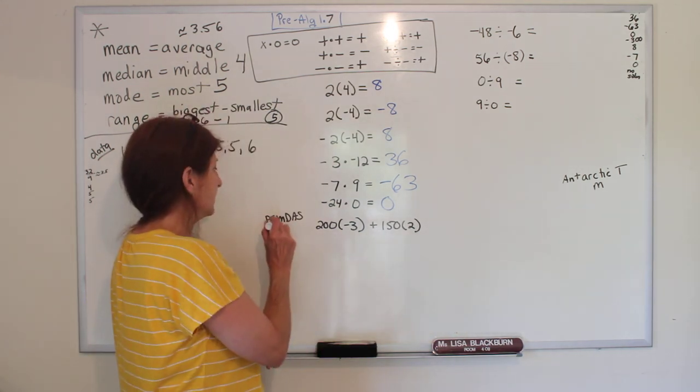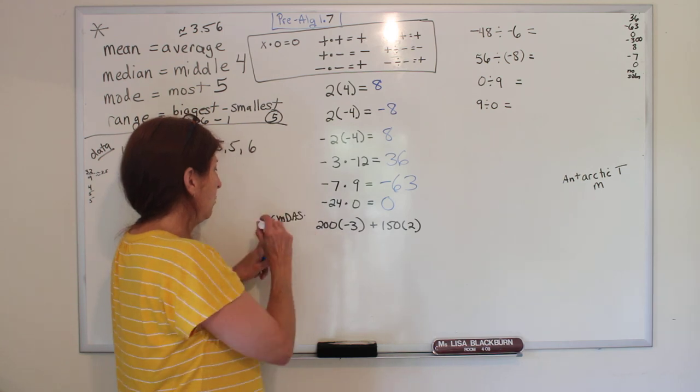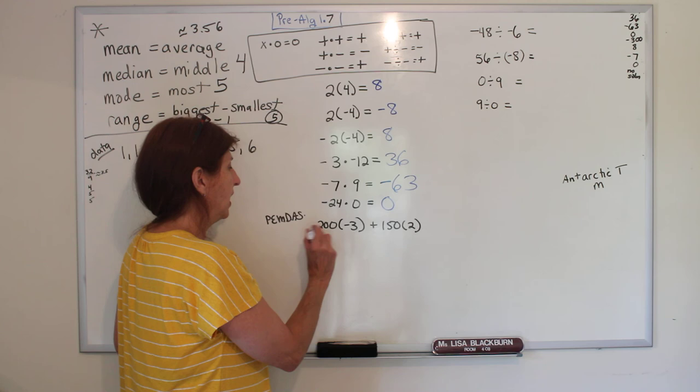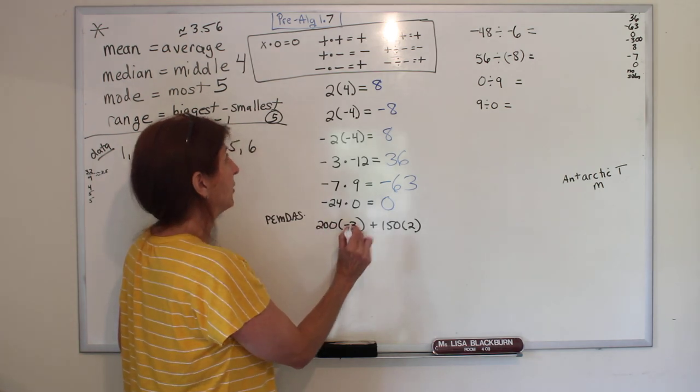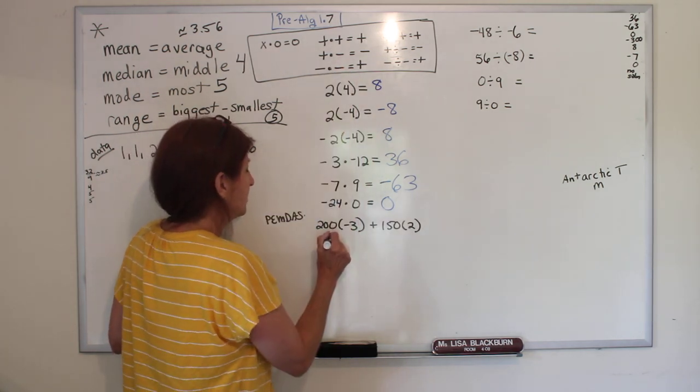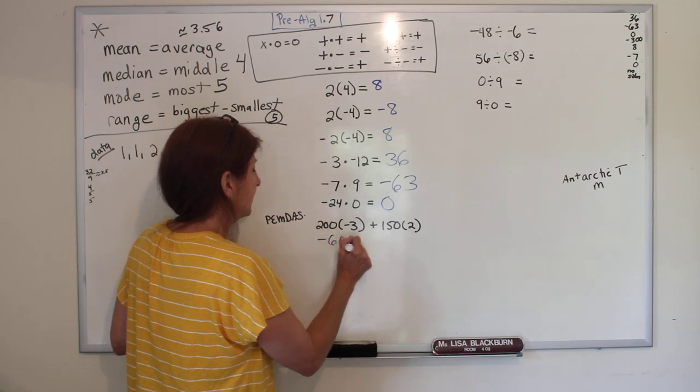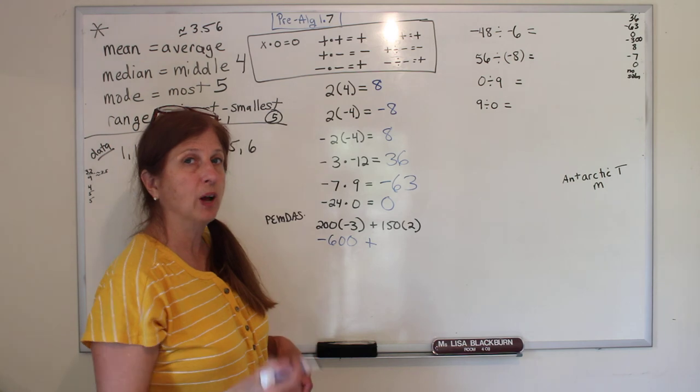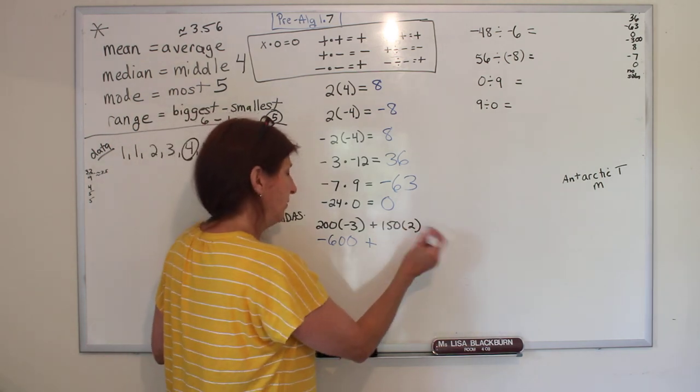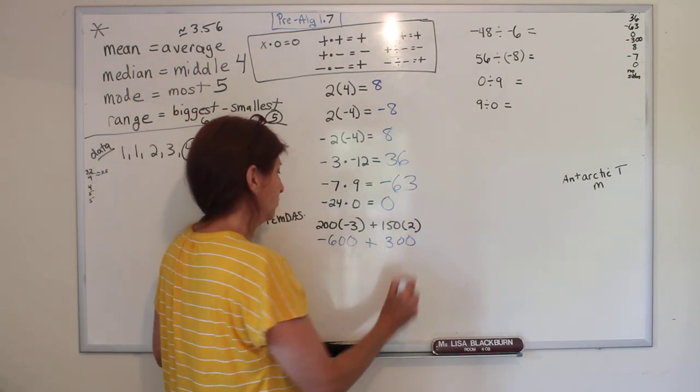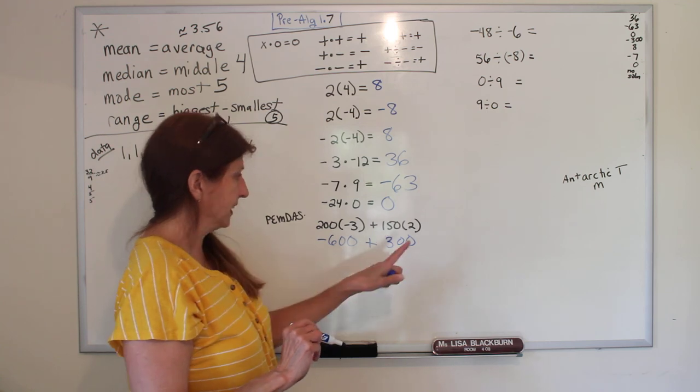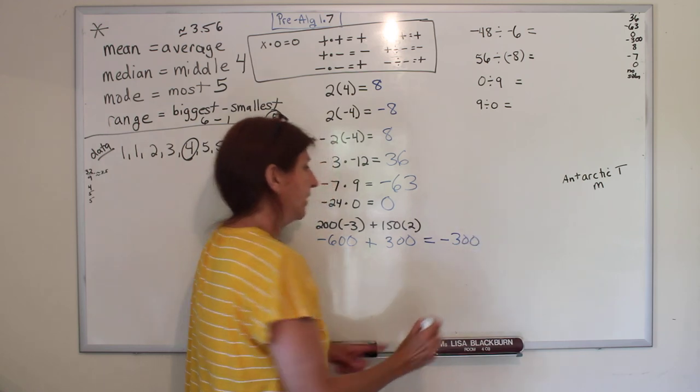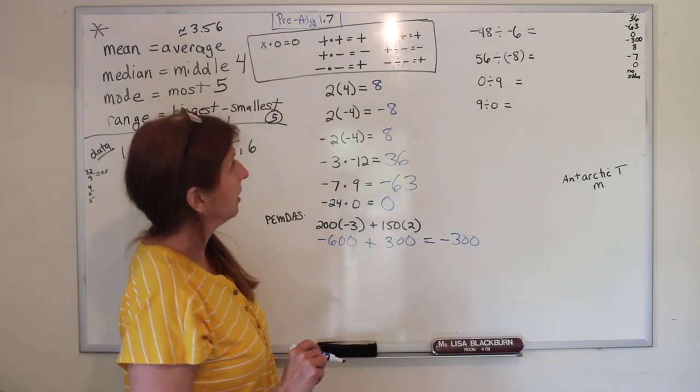So we do our parenthesis multiplying first. 200 times negative 3, it has one negative and one positive, so it's negative 600. Plus 150 times 2, they're both positive, 150 times 2 is 300. I owed you 600, I paid back 300, I still - well, I only owe you 300 now.